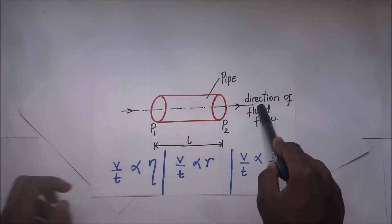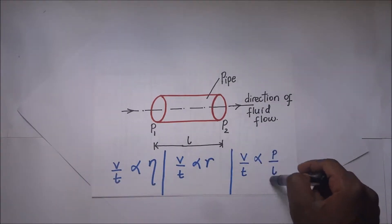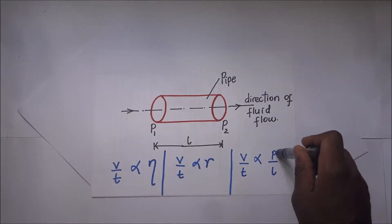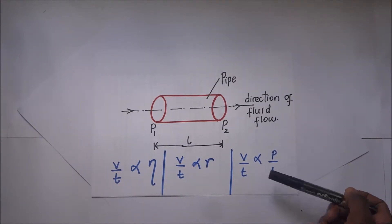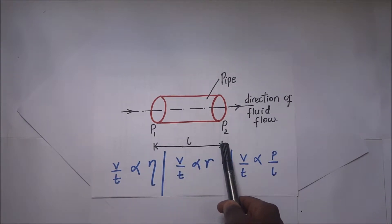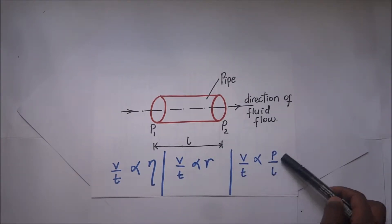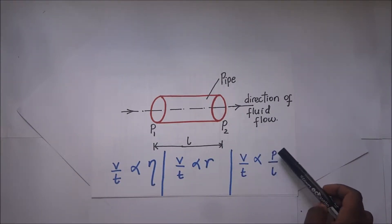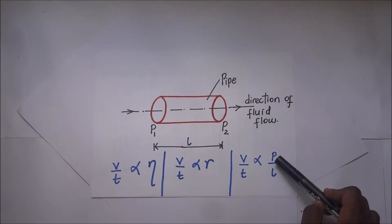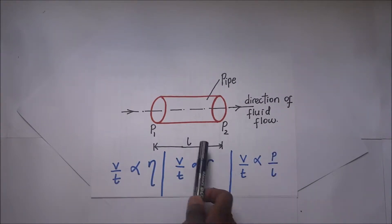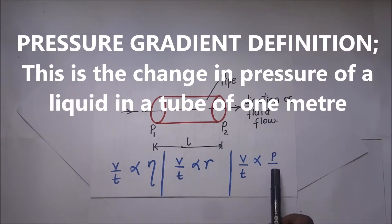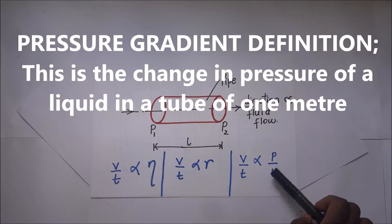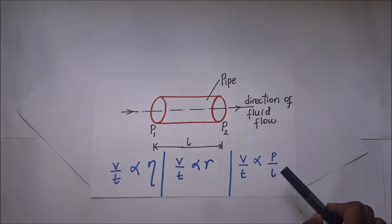The pressure gradient as the fluid is flowing through — we're talking about pressure P, which stands for pressure difference, divided by L, the length of the pipe. Pressure gradient is simply the change in pressure of the liquid in a tube per one meter: P2 minus P1 divided by the length L.